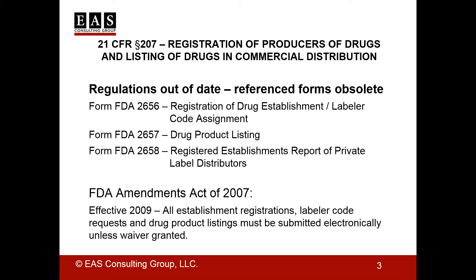I can remember many days spent filling out the little boxes on those forms. Now it's difficult to even find out what they used to look like. But since 2009, all establishment registrations, label or code requests, and drug product listings are required to be submitted electronically unless a waiver has been granted. To obtain a waiver, a firm would need to write to the FDA and explain why they are unable to submit electronically.